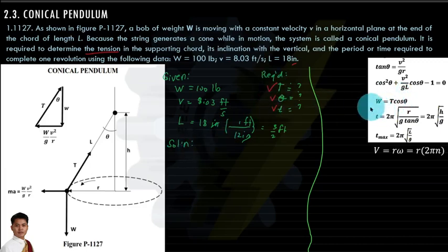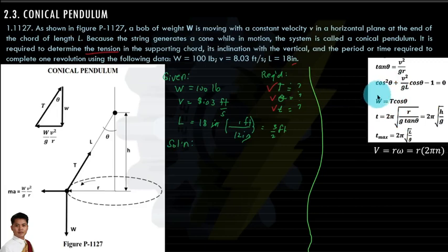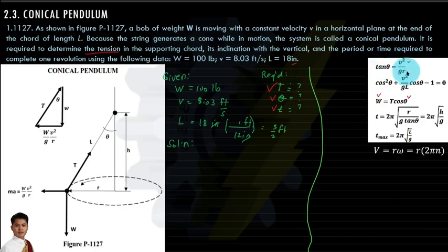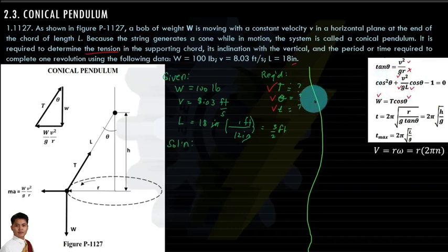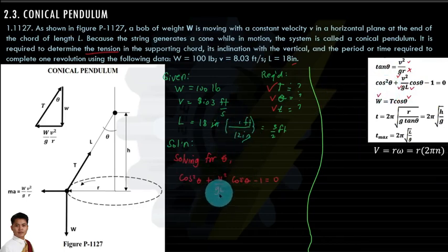We need to find: (1) tension T in the chord, (2) inclination theta with the vertical, and (3) period t. Starting with theta — we cannot use the first equation since we have no radius, but we can use the second equation since we have velocity, gravity, and length l = 3/2 feet.